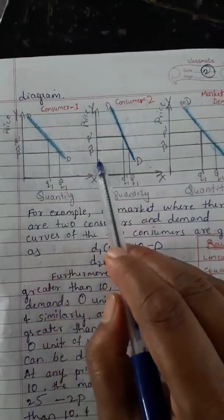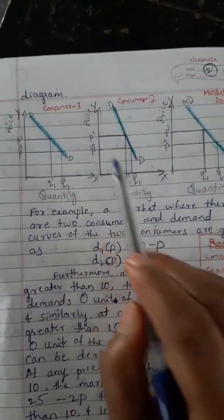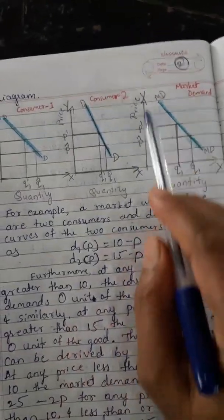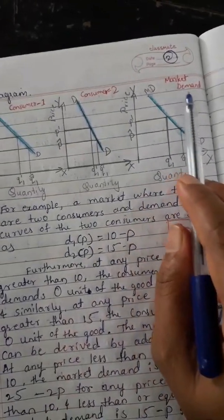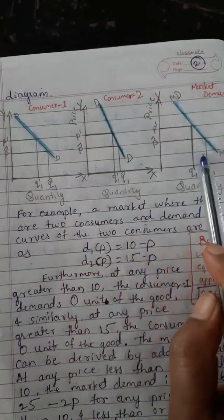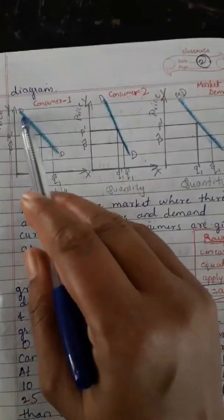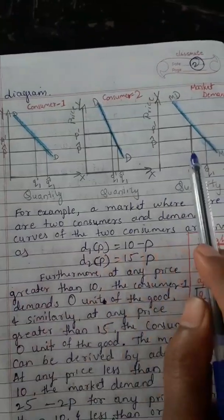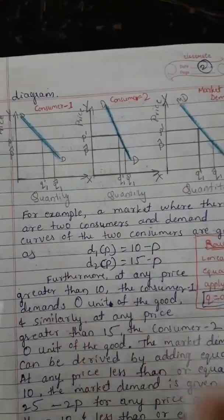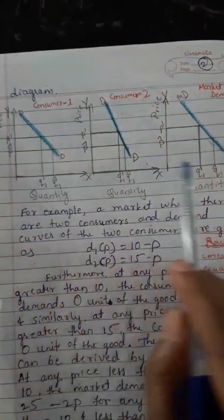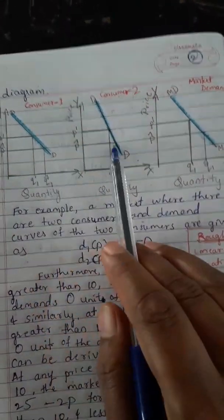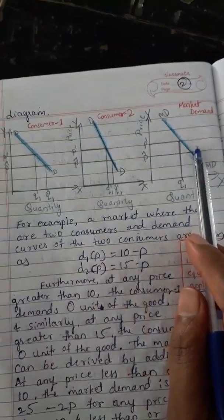The market demand can be shown in a table with columns one, two, and three — representing consumer one, consumer two, and market demand respectively.